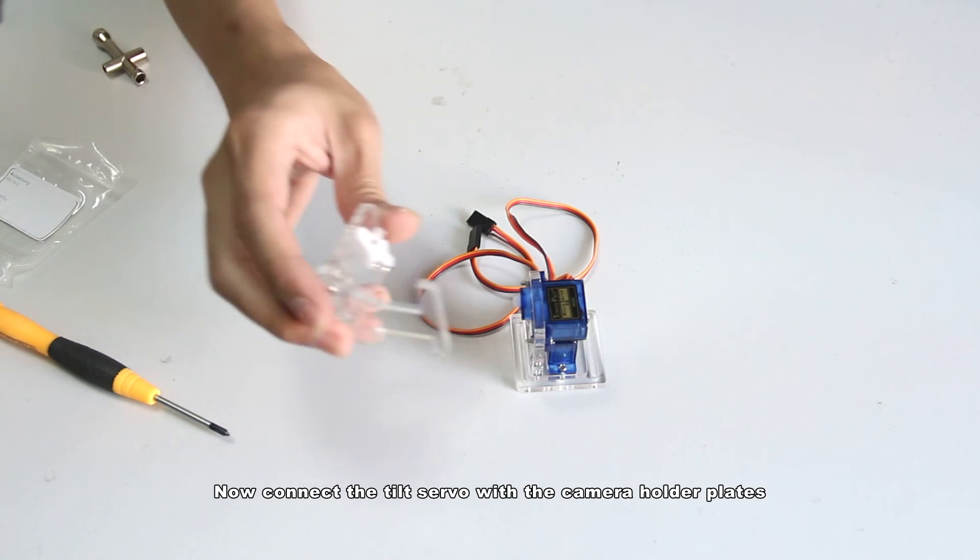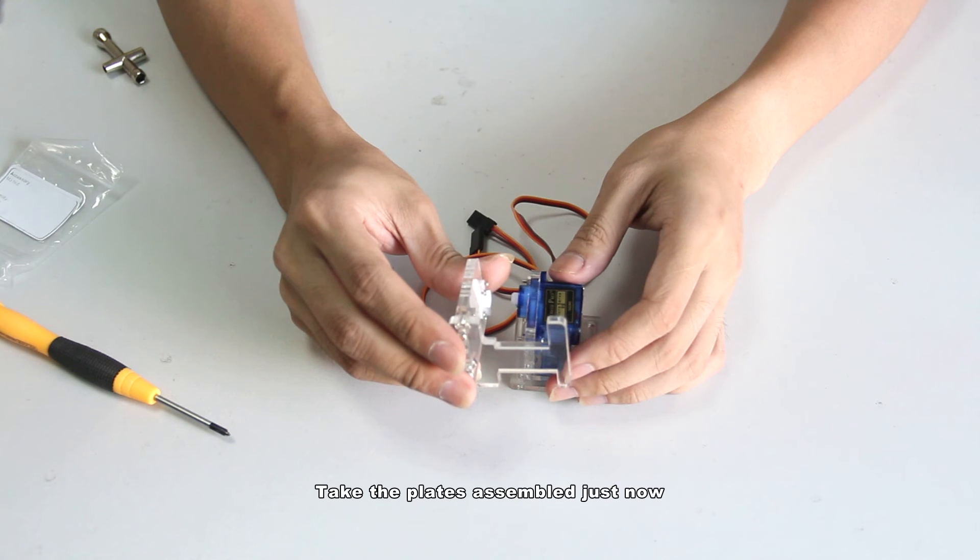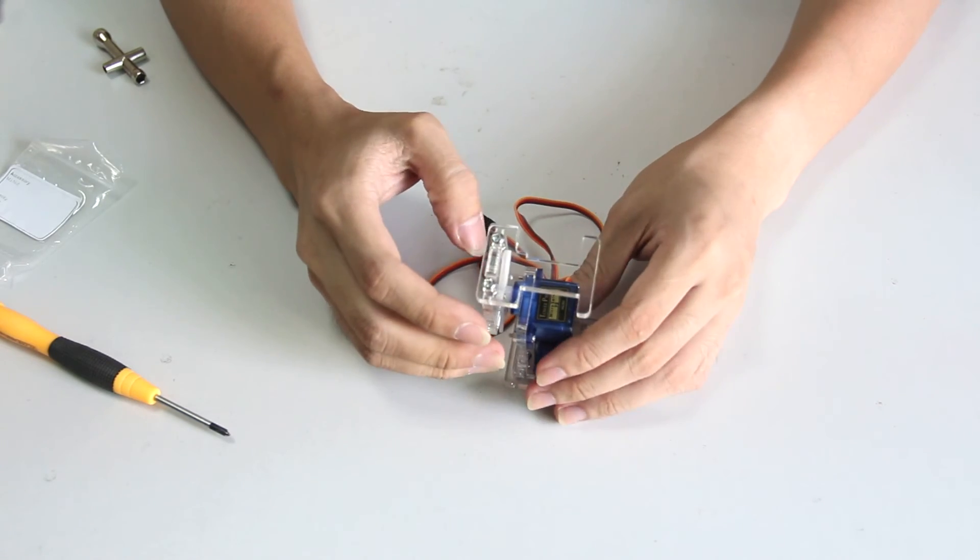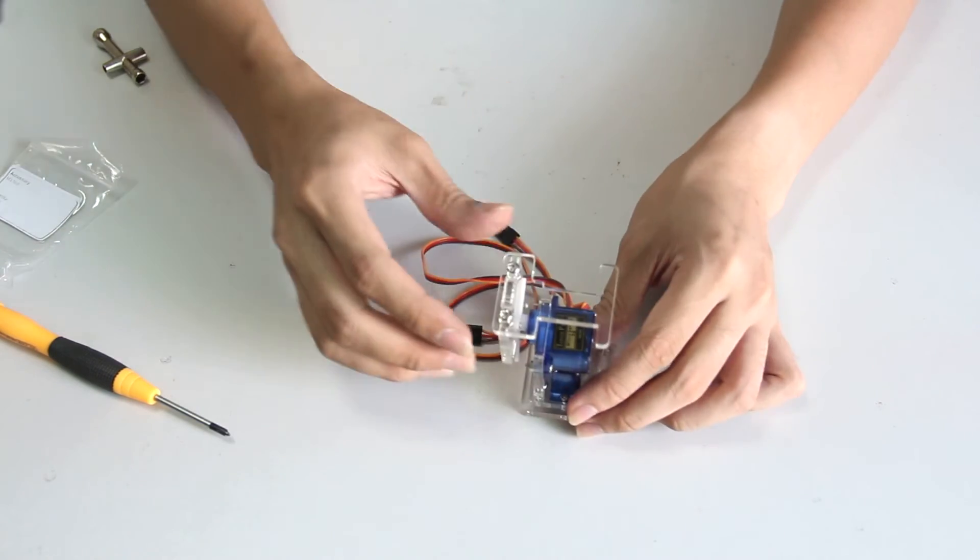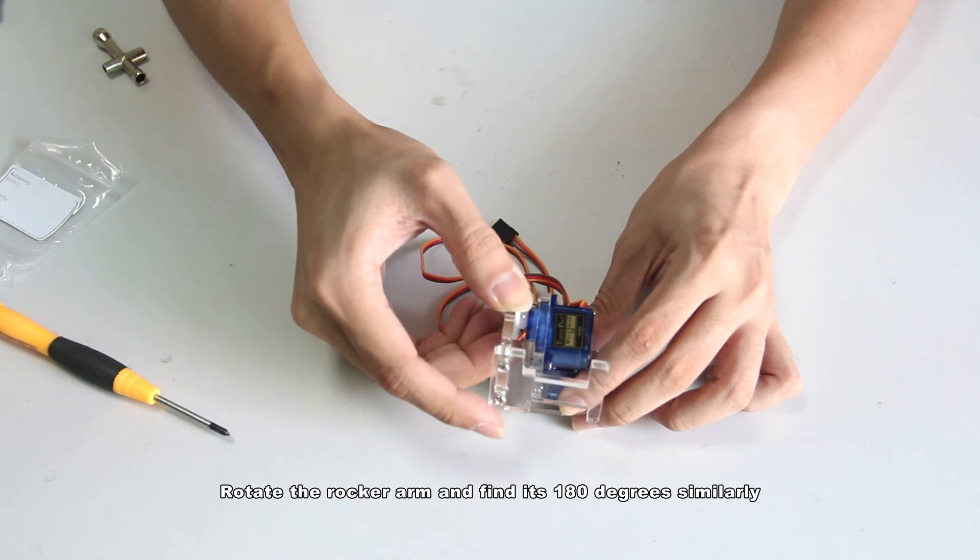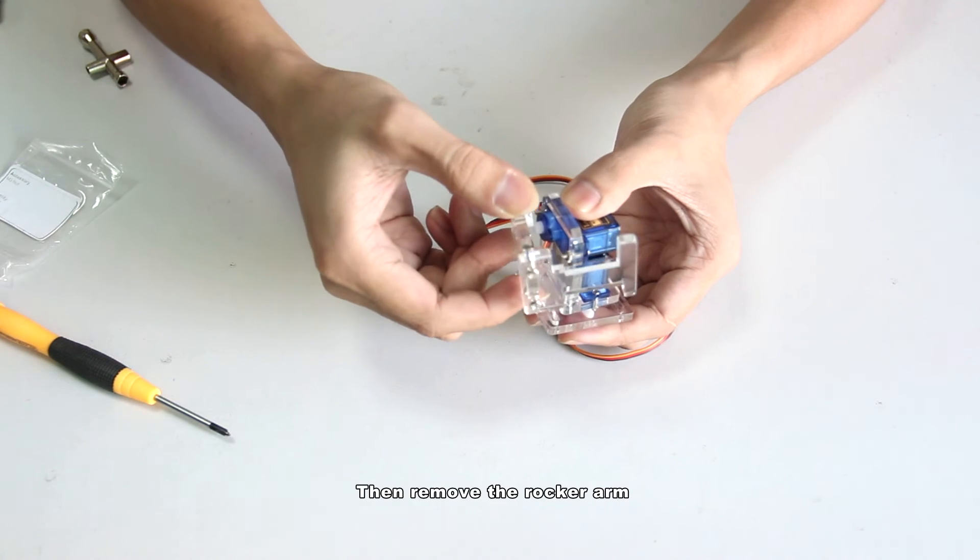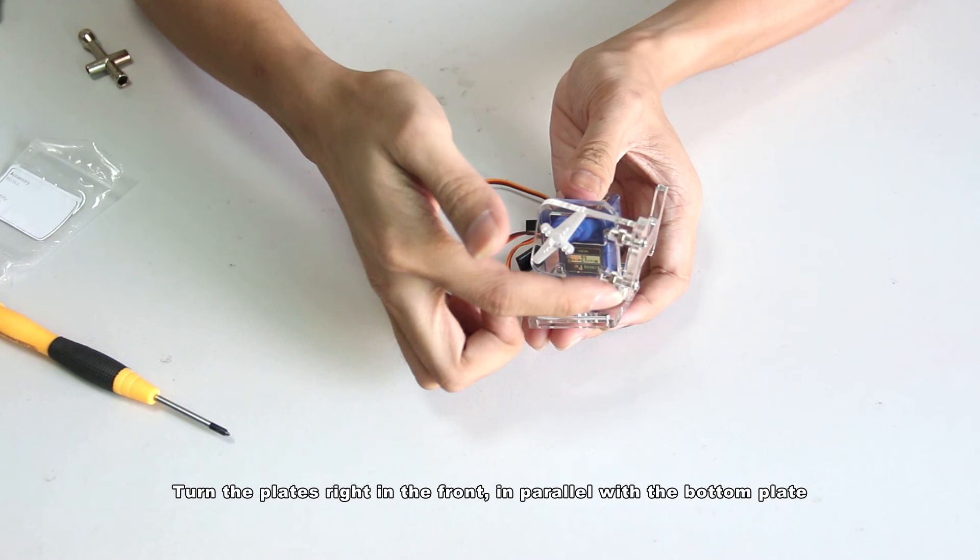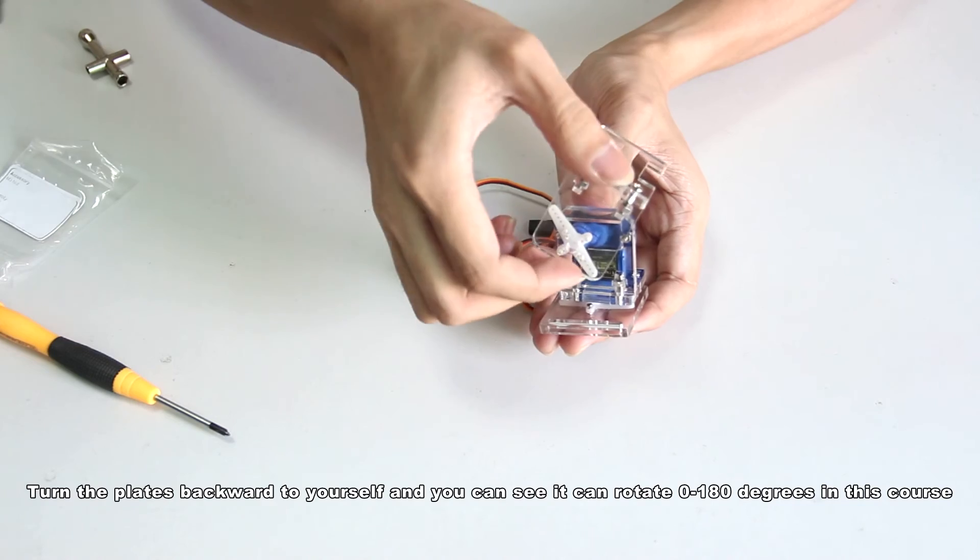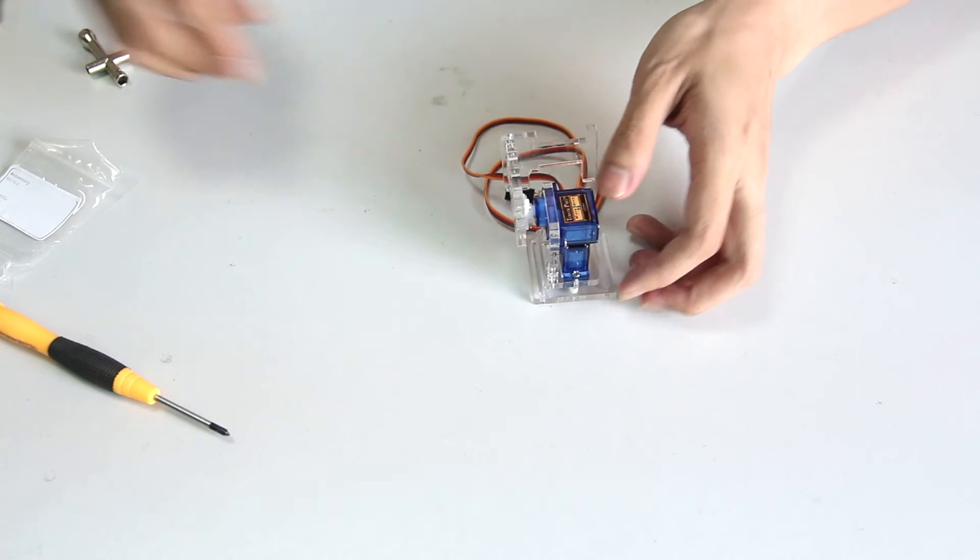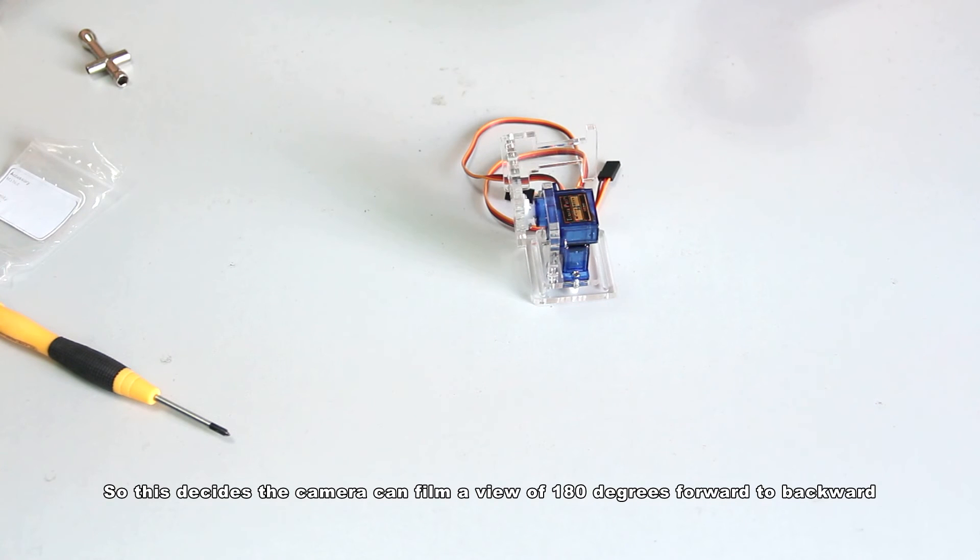Now connect the tilt servo with the camera holder plates. Take the plates assembled just now. Stick the servo shaft into the rocker arm. Rotate the rocker arm and find its 180 degrees similarly. Stop there. Then remove the rocker arm. Turn the plates right in the front in parallel with the bottom plate. Turn the plates backward to yourself and you can see it can rotate 0 to 180 degrees in this course. So this design means the camera can film a view of 180 degrees forward to backward.